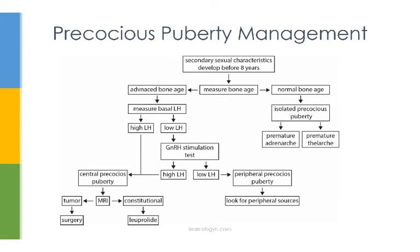For peripheral precocious puberty, you look in the periphery for different sources. Causes include ovarian cysts or tumors — look with an abdominal ultrasound. A simple cyst can be left alone, but a complex cyst or tumor should be resected. Another cause is congenital adrenal hyperplasia, diagnosed by measuring urine levels of 17-hydroxyprogesterone; treat by giving steroid supplements. You can also look for adrenal tumors via adrenal ultrasound and remove any mass surgically. Additionally, measure levels of testosterone and DHEAS.